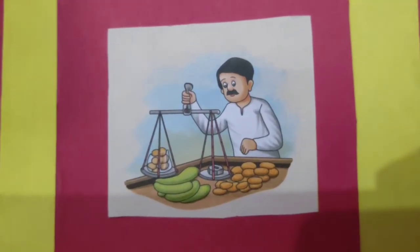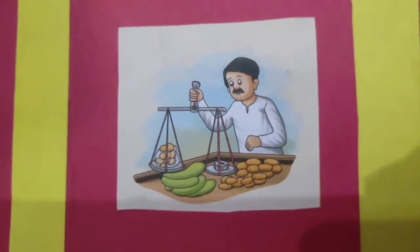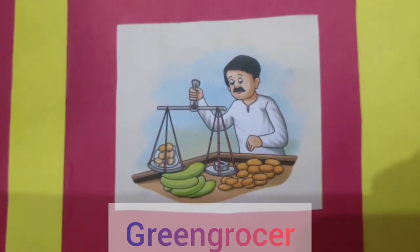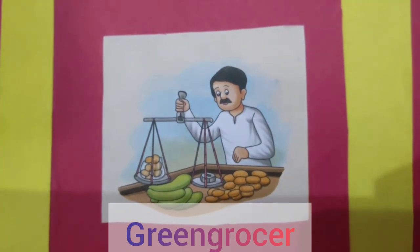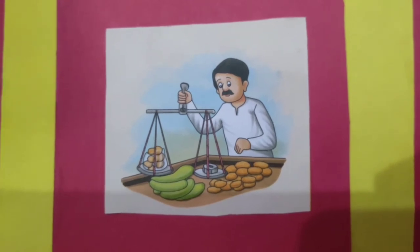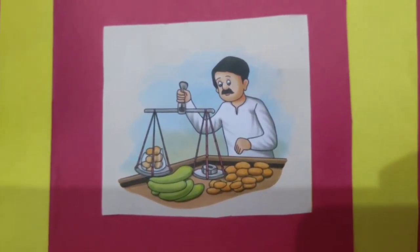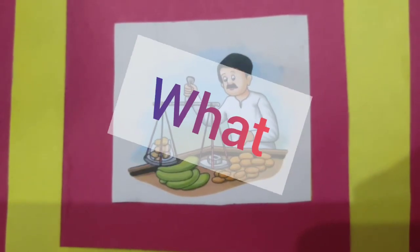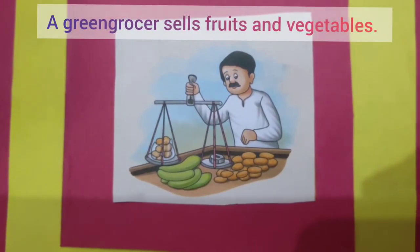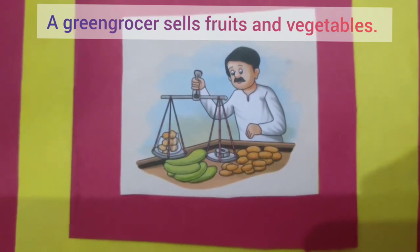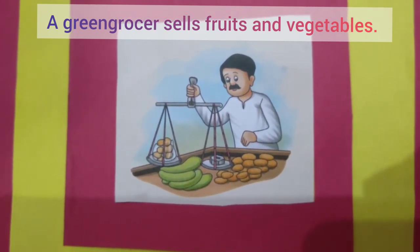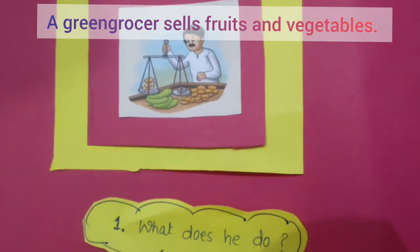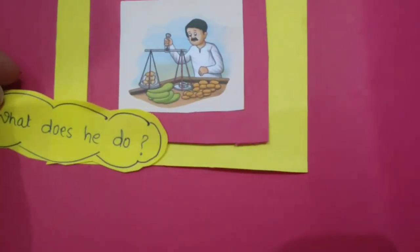So students, let's try another picture. Now observe this picture. Identify the name of this community helper. Do you know the name of this helper? Green Grocer. So first of all, write in your notebooks: Green Grocer. Now you have to think about the sentences. How will you think about the sentences? What could be the first question in your mind? The first question will be: what does a Green Grocer do? A Green Grocer sells fruits and vegetables. Write the first sentence quickly. We have written the first sentence.